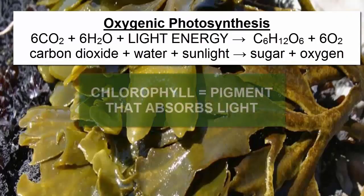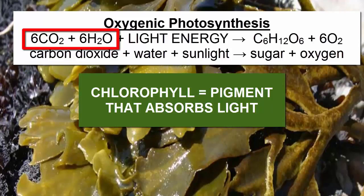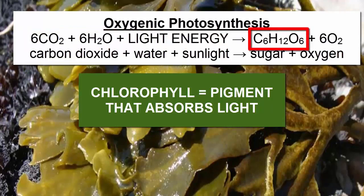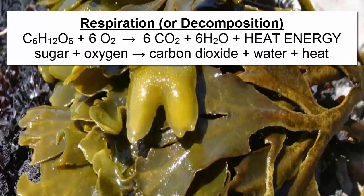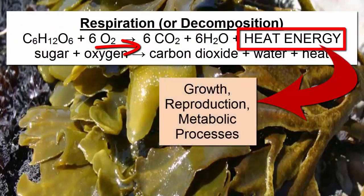Photosynthesis uses the pigment known as chlorophyll to capture light energy from the sun, which it then uses to combine abundant surrounding molecules like carbon dioxide and water to synthesize sugar molecules. Respiration is the opposite process and happens when organisms later break down sugar to release its stored energy and use it for growth, reproduction, and energy-intensive metabolic processes. Whether an organism makes its own sugar or gets its sugar by ingesting other organisms, it still must perform respiration to access the stored energy.